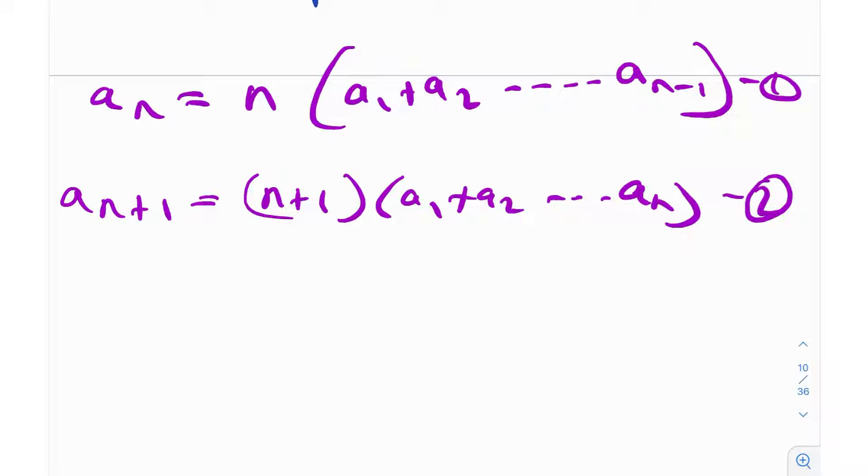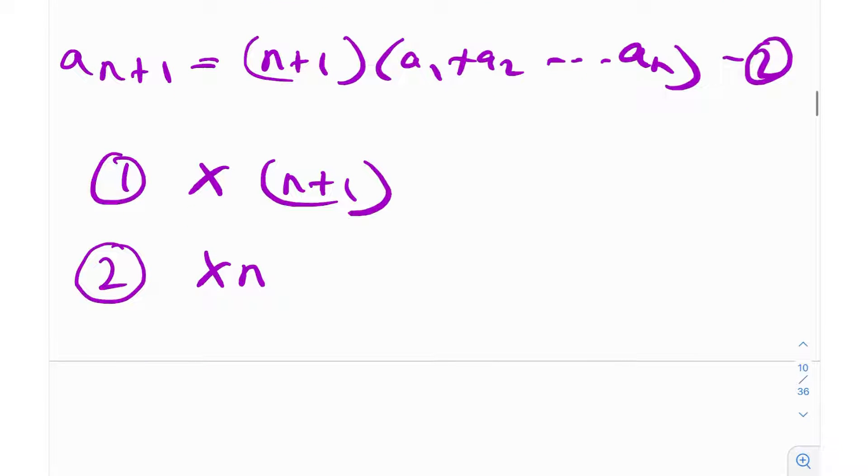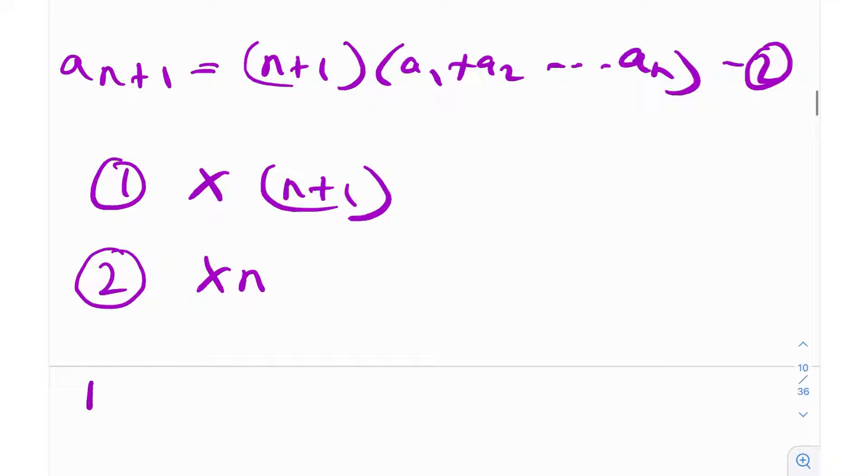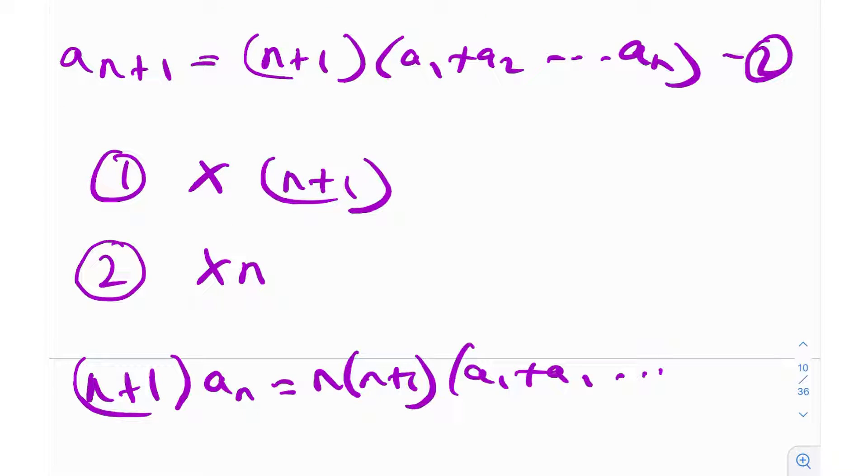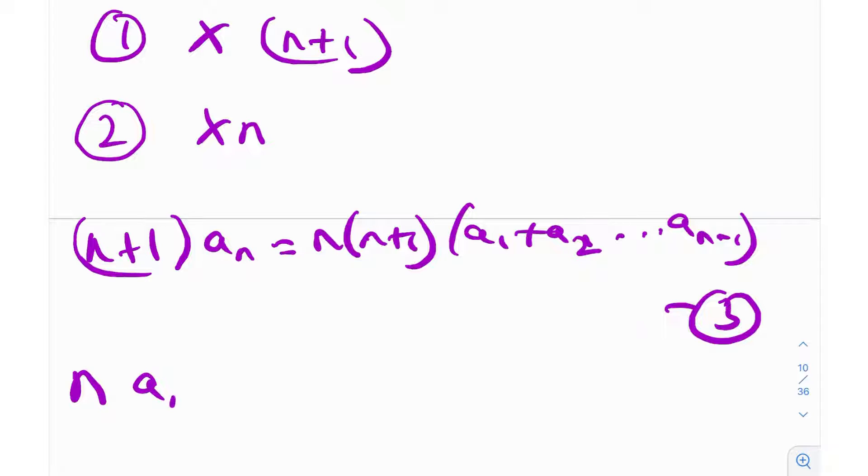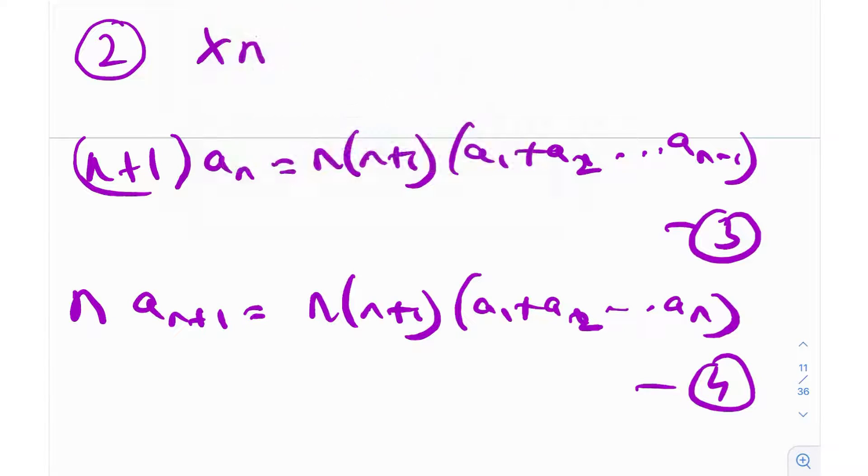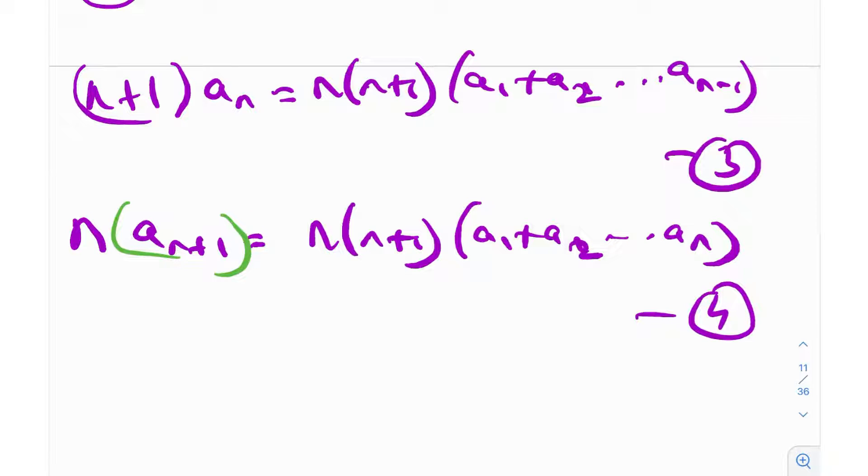I can multiply equation 1 by (n+1) and equation 2 by n. That gives me (n+1)aₙ = n(n+1)(a₁ + a₂ + ... + aₙ₋₁) as equation 3. When I multiply equation 2 by n, I get naₙ₊₁ = n(n+1)(a₁ + a₂ + ... + aₙ) as equation 4. Now it becomes pretty clear what to do.